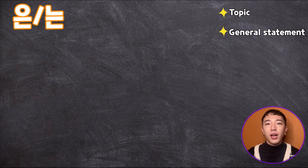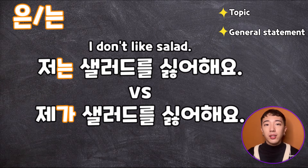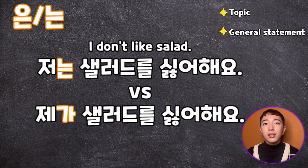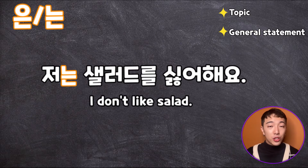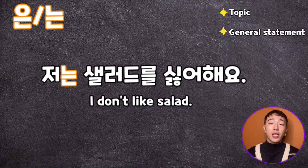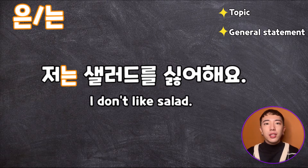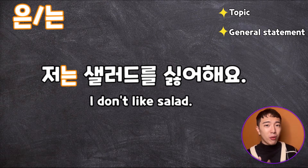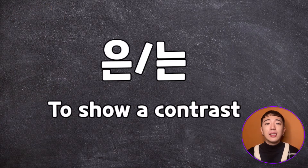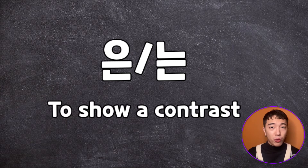Quiz: I don't like salad. 저는 샐러드를 싫어해요 versus 제가 샐러드를 싫어해요. Which one is correct? 저는 샐러드를 싫어해요 is correct. In certain circumstances you can say 제가 샐러드를 싫어해요, but we'll talk about that a bit later. The topic is me — it's a general statement. Also, 는 is referring to contrast.